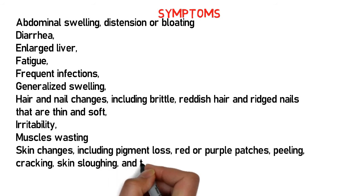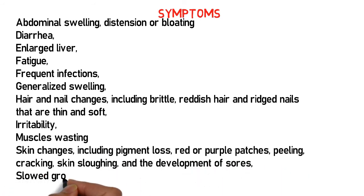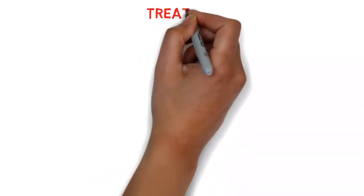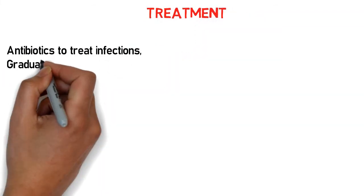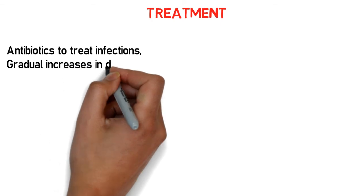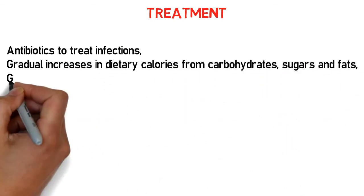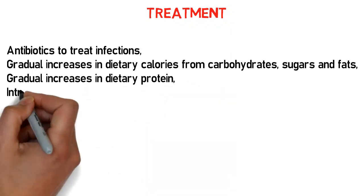Additional symptoms include skin changes such as pigment loss, red or purple patches, peeling, cracking skin, slowing in the development of sores, and slowed growth leading to short stature and weight loss. Common treatments for kwashiorkor include antibiotics to treat infections, and gradual increases in dietary calories from carbohydrates, sugars, and fats, as well as gradual increases in dietary protein.